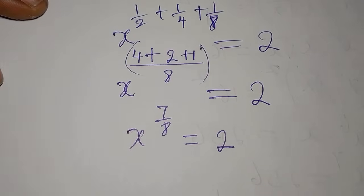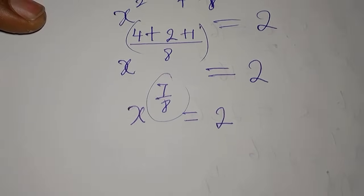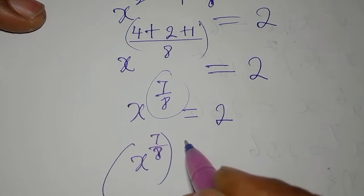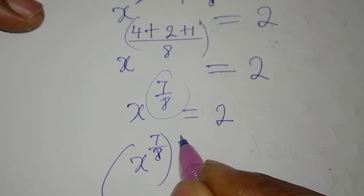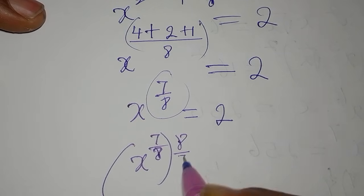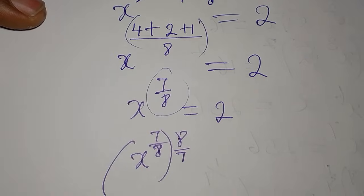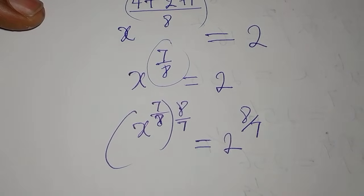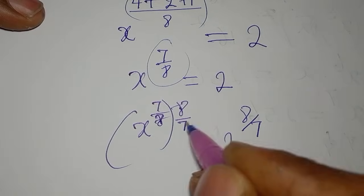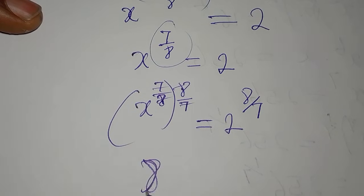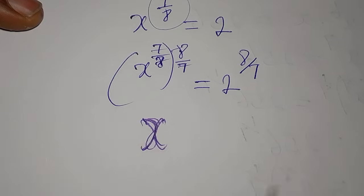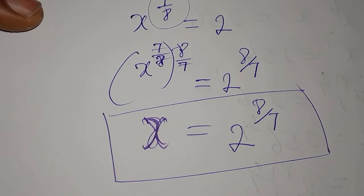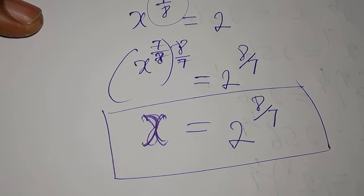We need to transfer this power to the other side. We multiply both sides by the reciprocal of 7 over 8, which is 8 over 7. The 8s cancel and the 7s cancel on the left, leaving x alone, equal to 2 to the power of 8 over 7. Going back to the first method, we got the same answer.